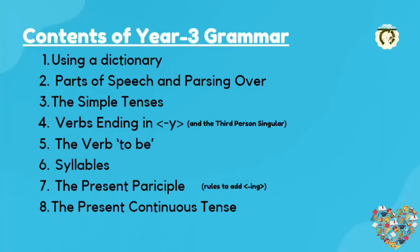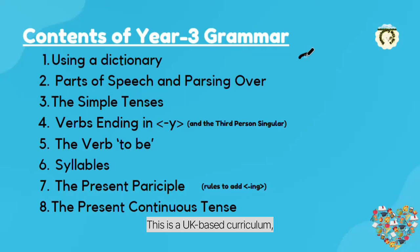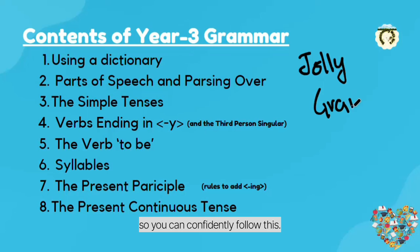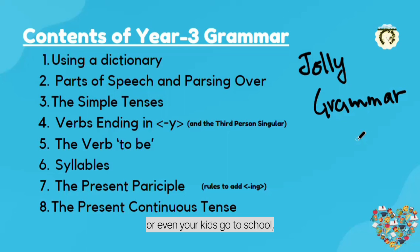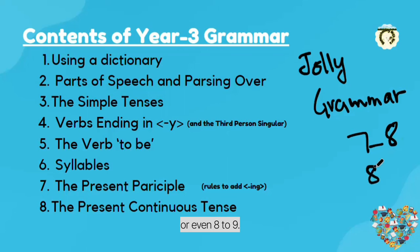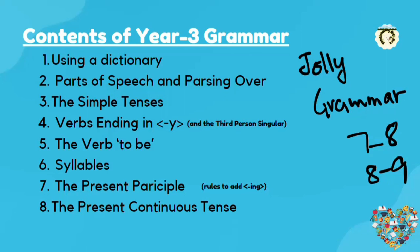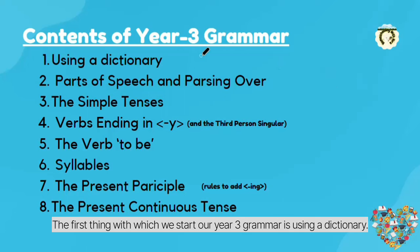So there you go. Just to give you an idea, the curriculum I am following is Jolly Grammar. This is a UK-based curriculum and it is internationally known. You can confidently follow this if you are homeschooling your children, or even if your kids go to school but you want to give them some extra support. This curriculum is best suited to ages 7 to 8, or even 8 to 9 if you are in a country where grammar starts with grade 1.